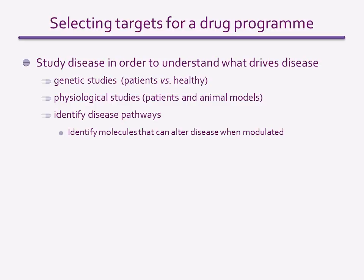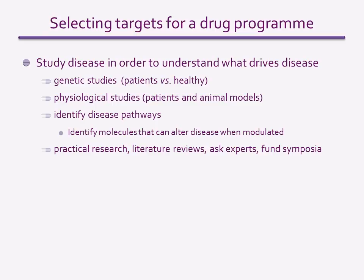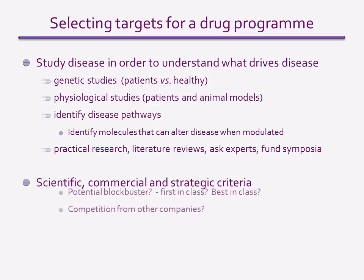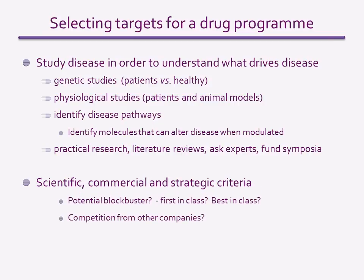The disease research will begin with literature reviews. Drug companies often seek the advice of experts in the field, usually in academia, and may fund research symposia to gather the world's experts together. After building up knowledge of the disease in this way, information leading to new targets will be sought by further practical research. A key strategic decision is whether to go for a completely new target — which would give a new class of drugs with a completely new mechanism of action and the potential for a blockbuster drug — or to choose a target already proven effective by existing drugs, with the aim of finding a better, best-in-class drug.